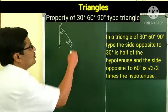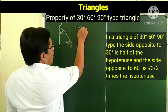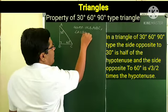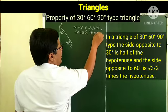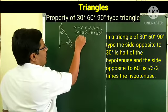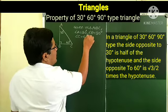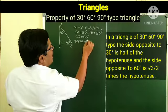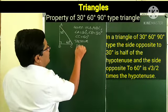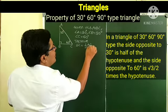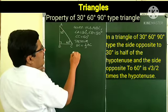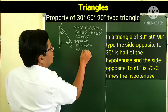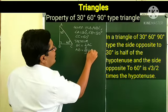Given in triangle ABC: angle A is equal to 30 degrees, angle B is equal to 90 degrees, angle C is equal to 60 degrees. We have to prove BC equals 1 upon 2 times AC (side opposite to 30°), and AB equals root 3 upon 2 times AC (side opposite to 60°). For construction, extend BC to point D such that BC equals BD, and draw segment AD.